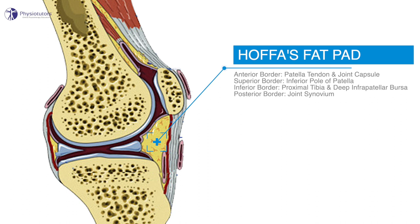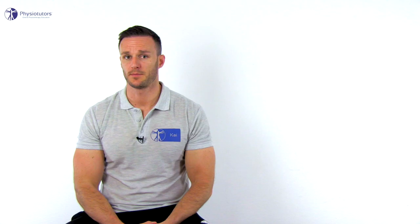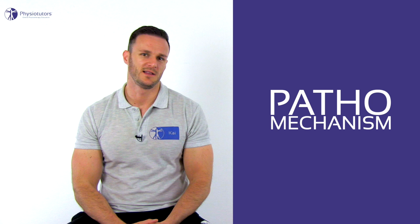Hi and welcome back to Physiotutors. The infrapatellar fat pad is an intracapsular and extrasynovial adipose tissue occupying the anterior knee joint. It is bordered anteriorly by the patellar tendon and the joint capsule, superiorly by the inferior pole of the patella, inferiorly by the proximal tibia and the deep infrapatellar bursa, and posteriorly by the joint synovium. As it is highly vascularized and innervated, impingement of the infrapatellar fat pad is a potential source of nociception causing anterior knee pain. Biomechanically, the fat pad is a mobile structure that can help to stabilize the patella and the patellar tendon and prevents pinching of the synovial membrane.